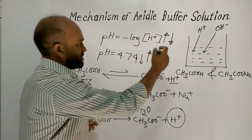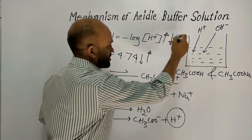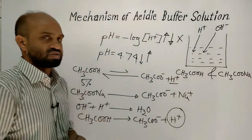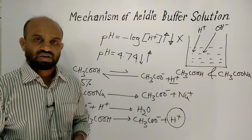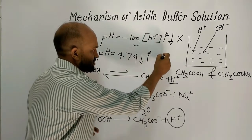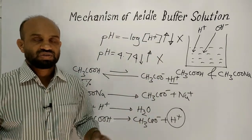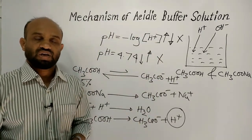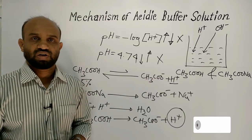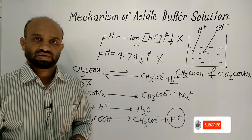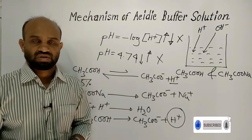So there is actually no change in the concentration of hydrogen ion, and ultimately no change in the pH value. In this way, an acidic buffer solution retains its pH value almost unaltered.